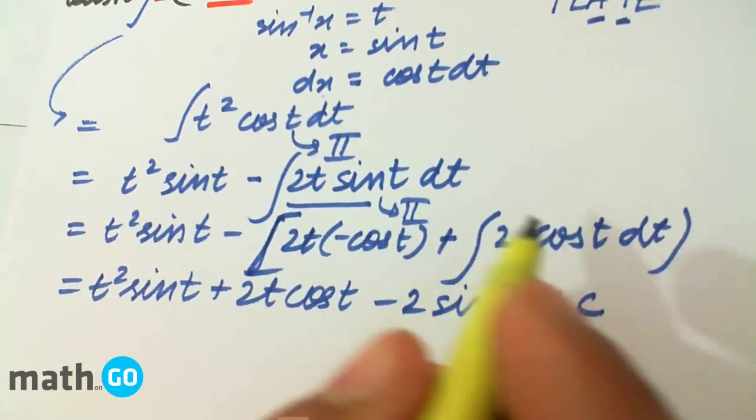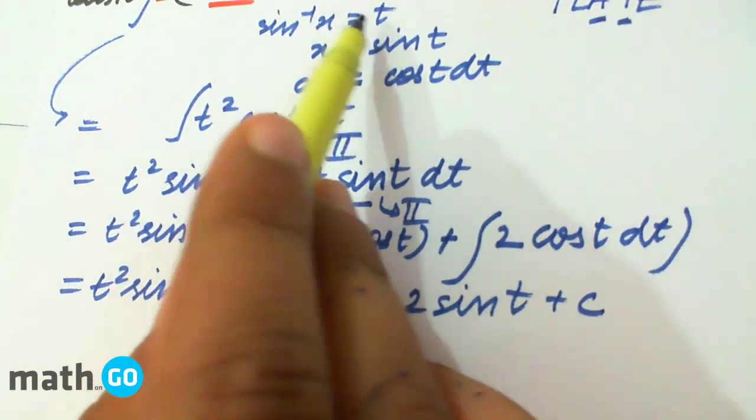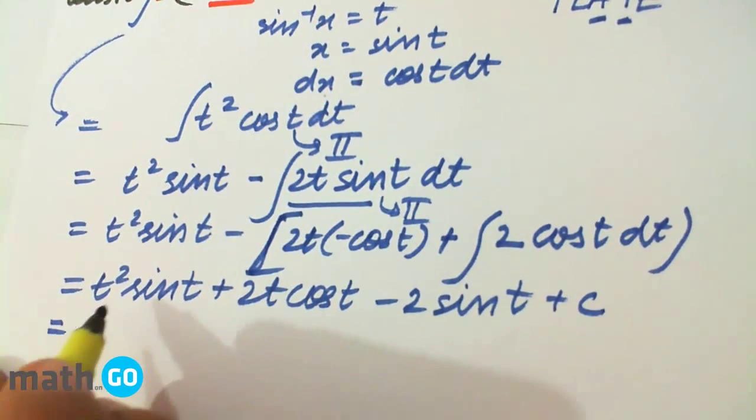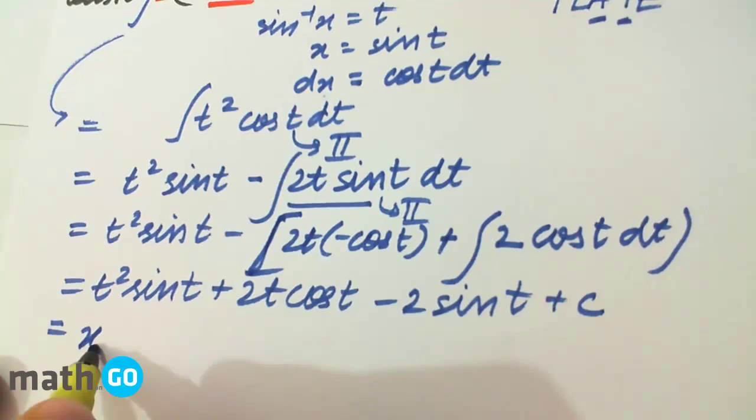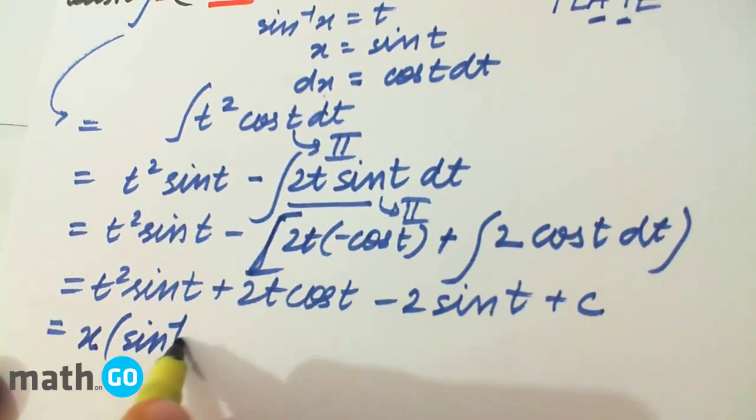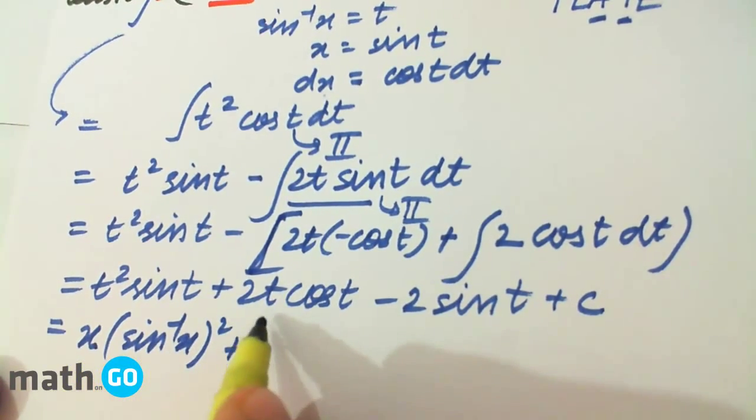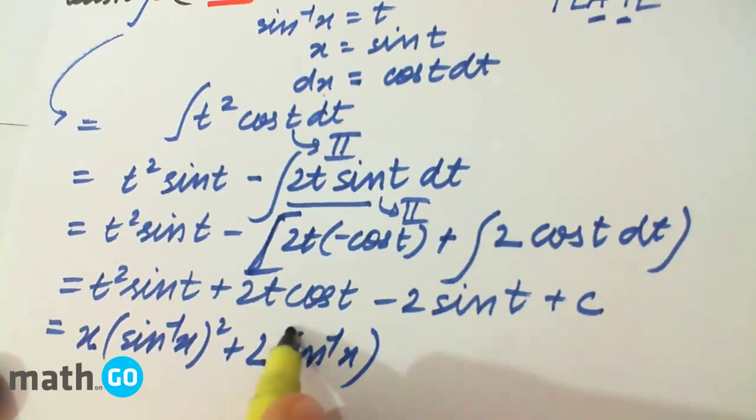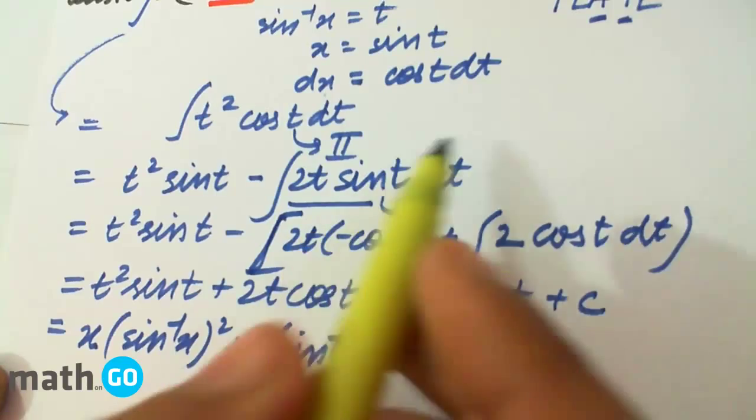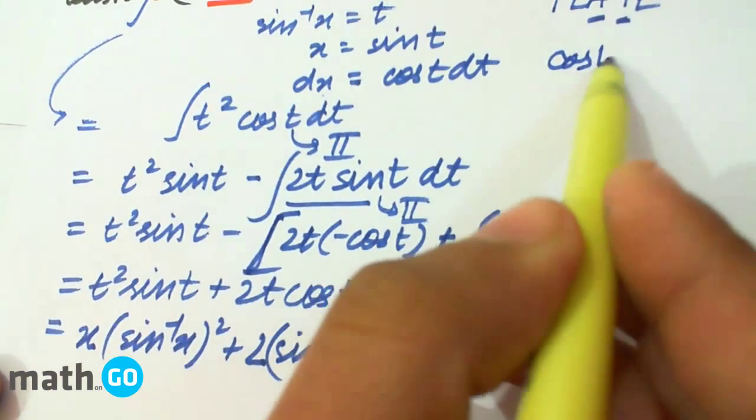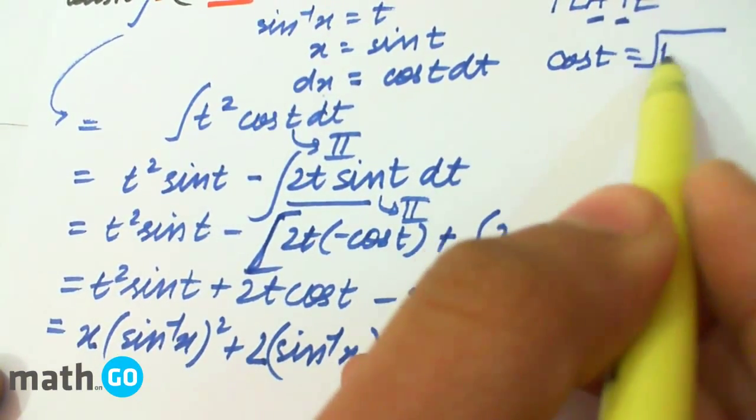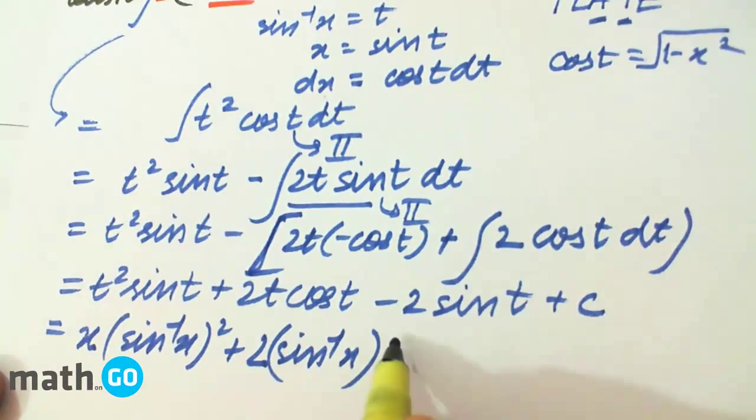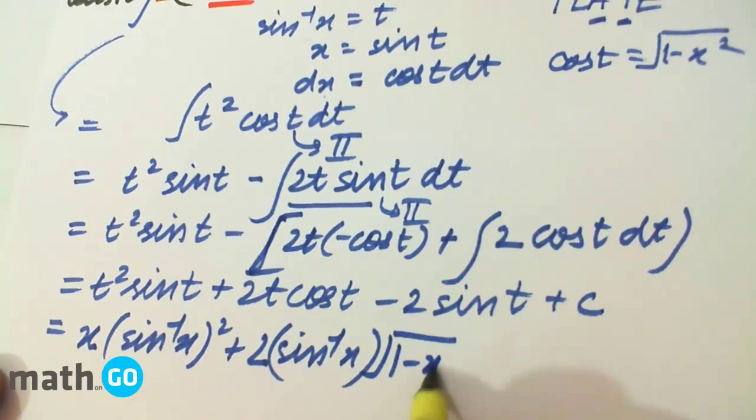Now simply what do we do? We have to put the value of t, that is sin inverse x, in this expression, giving us sin inverse x whole square plus 2 sin inverse x. Now cos t is root of 1 minus x square because sin t is x. So here we get root 1 minus x square minus 2x plus c.